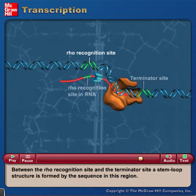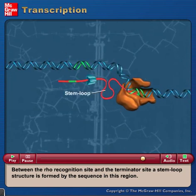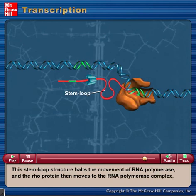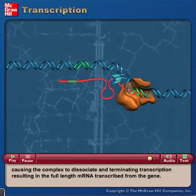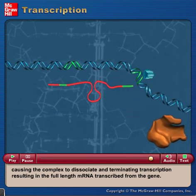Between the Rho recognition site and the terminator site, a stem-loop structure is formed by the sequence in this region. This stem-loop structure halts the movement of RNA polymerase, and the Rho protein then moves to the RNA polymerase complex, causing the complex to dissociate and terminating transcription, resulting in the full-length mRNA transcribed from the gene.